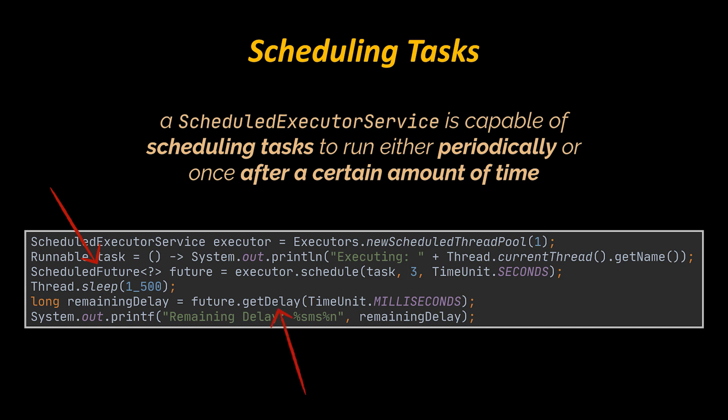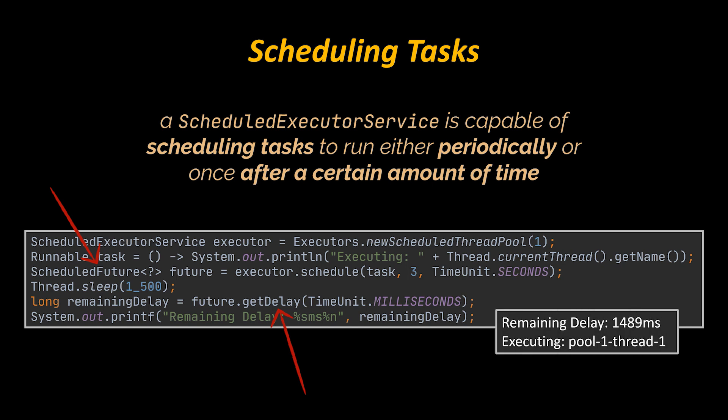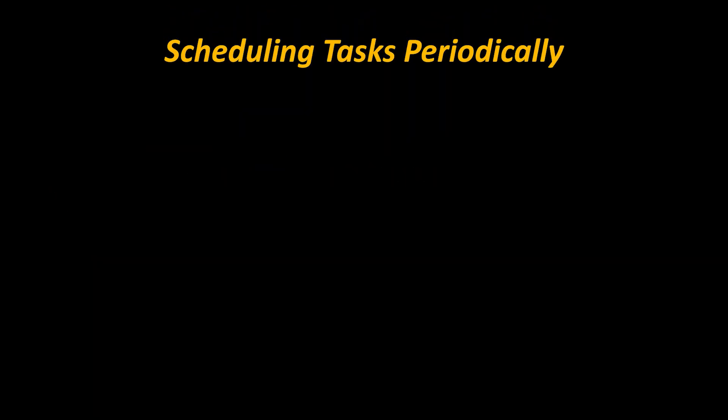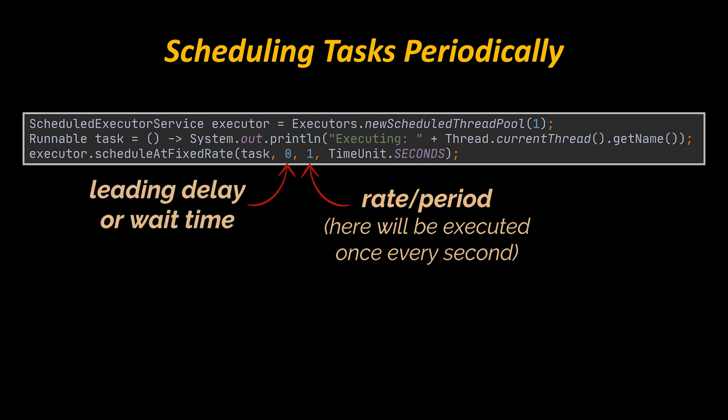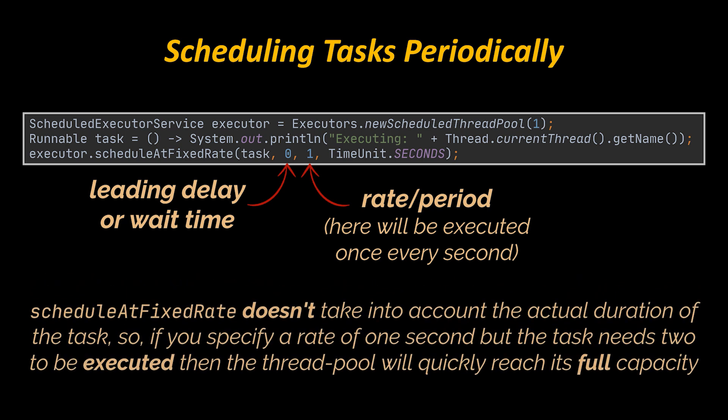Scheduling a task produces a specialized Future of type ScheduledFuture, which in addition to the regular Future methods provides the getDelay method to retrieve the remaining delay. After the delay has elapsed, the task will be executed concurrently. To schedule tasks to run periodically, executors provide two methods: scheduleAtFixedRate and scheduleWithFixedDelay. scheduleAtFixedRate executes tasks at a fixed time rate, like once every second, and also accepts an initial delay.